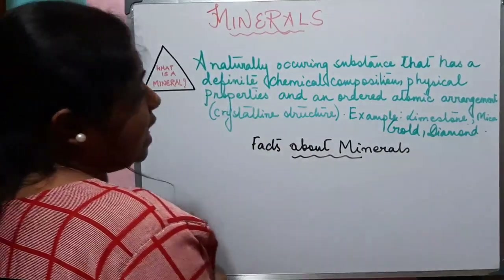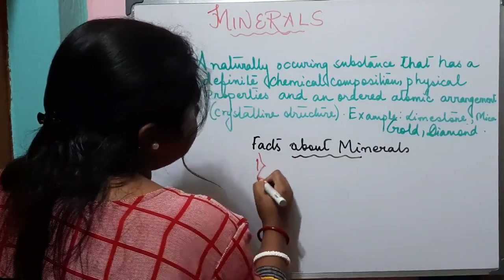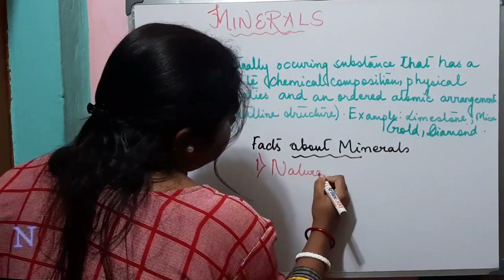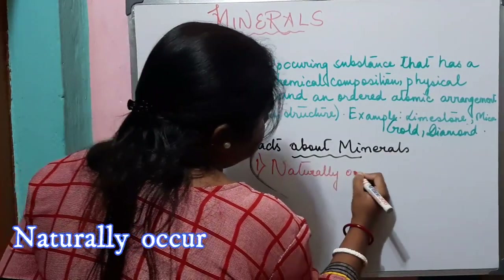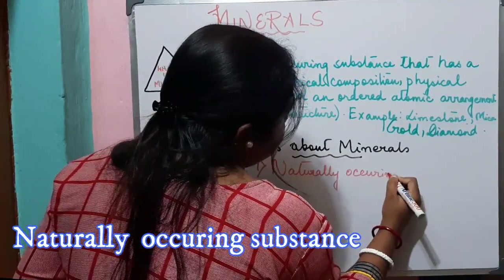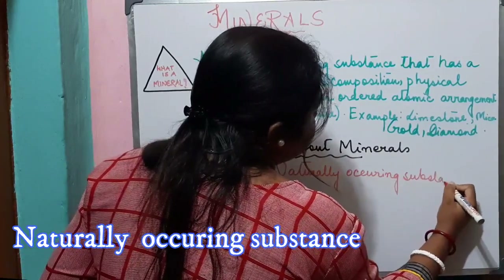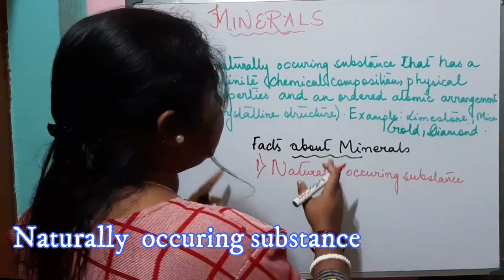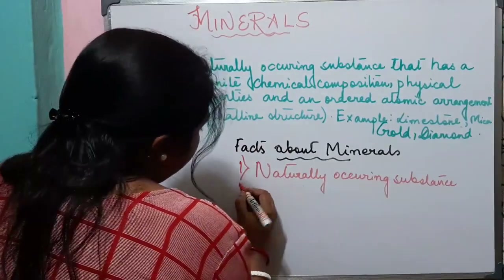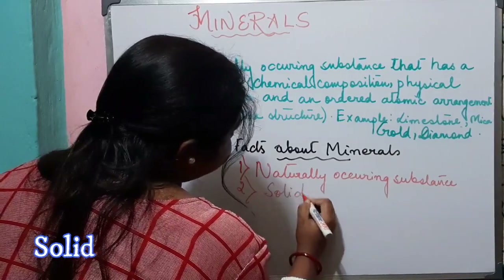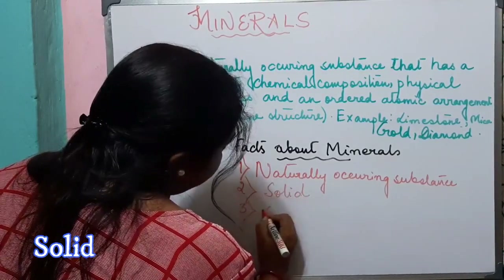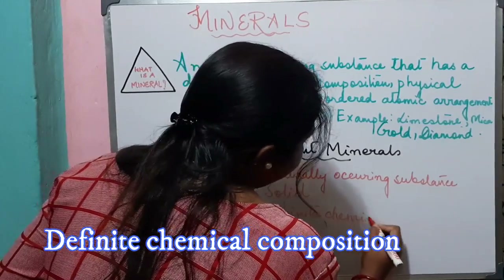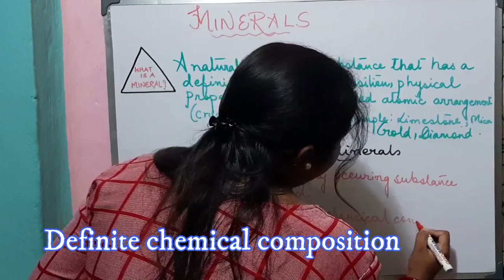Now let us know some important facts about minerals. Minerals are naturally occurring substances. A plastic, which is man-made, cannot be called a mineral. A mineral must be a naturally occurring solid substance with a definite chemical composition.